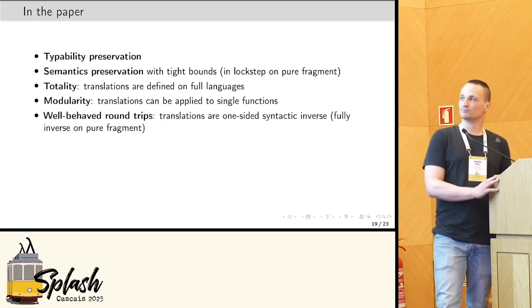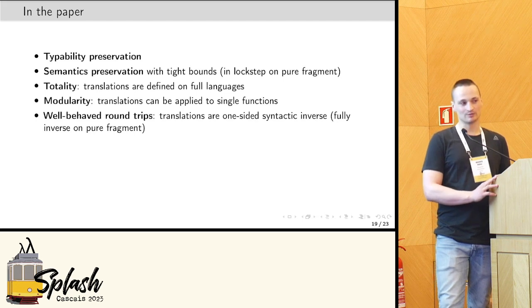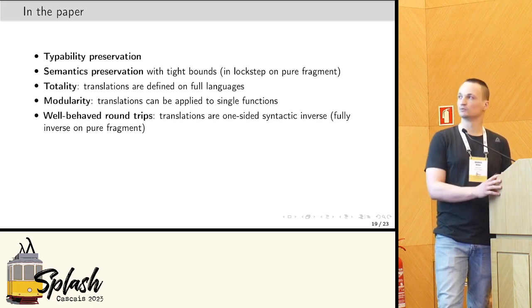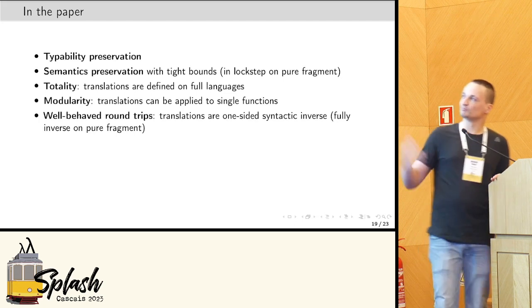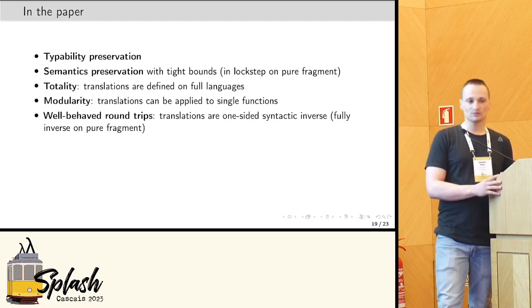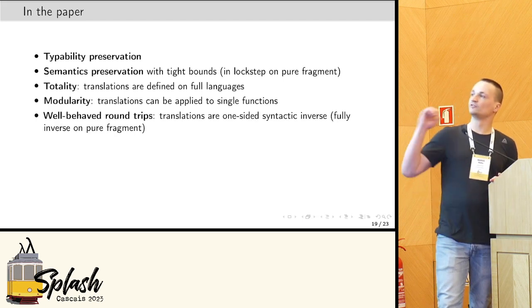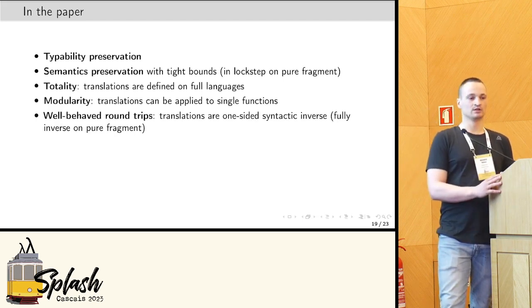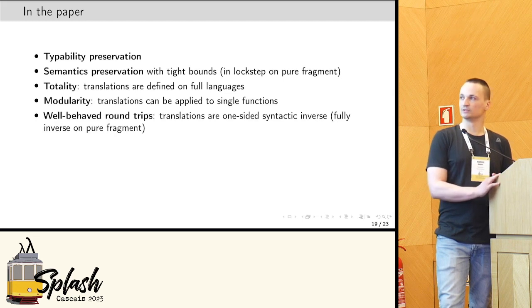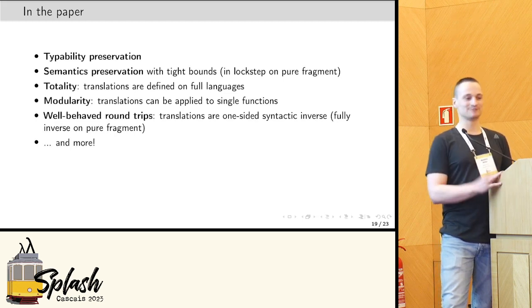Finally, round trips are also well-behaved. So, when composing the two translations, they have certain properties in particular. There are one-sided syntactic inverses on the full languages, and there are even fully inverse on the pure fragment. So, really an isomorphism here. Yeah. And there are, of course, several more properties, but look at the paper.